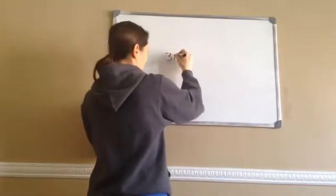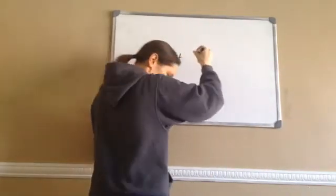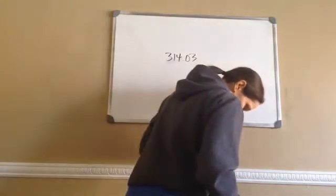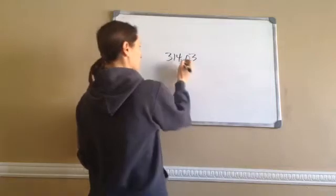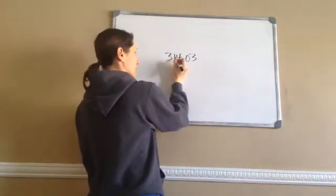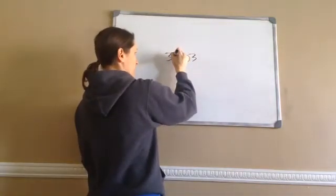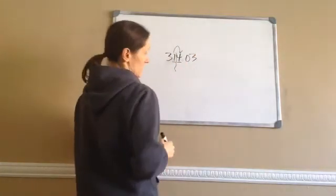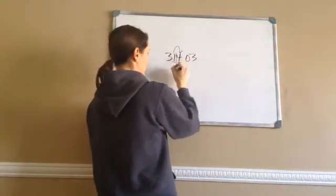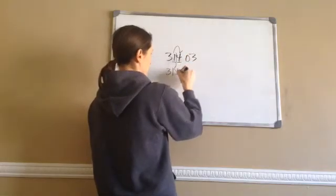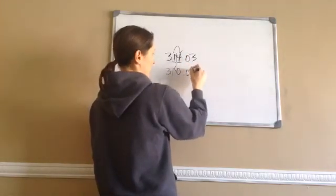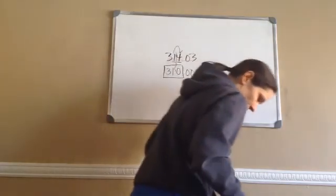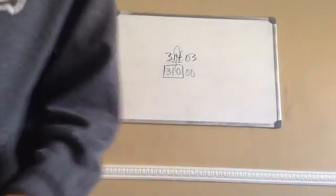It tells me to round to the nearest ten. This is the tens place, so right here is what I'm rounding to. I look to the right — it is not five or higher. So that stays the same, that becomes zero, and everything else becomes zero. Final answer is 310. That is lesson one hundred — thank you, thank you, thank you!